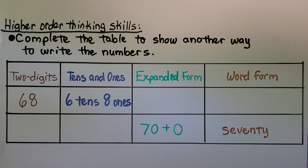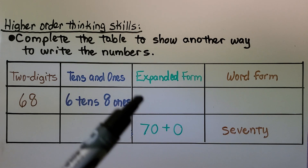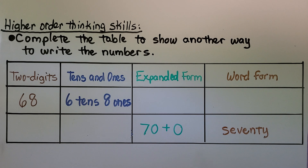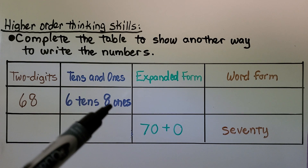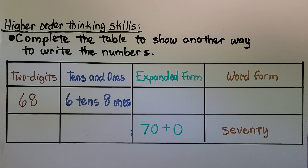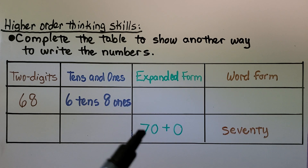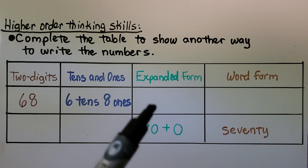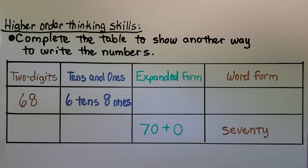Now we're going to use some higher order thinking skills — that means we have to think a little harder. We need to complete the table to show another way to write the numbers: two digits, tens and ones, expanded form, and word form. We can see 68 is written as two digits and as six tens and eight ones. We need to write it in expanded form: 60 plus 8. We write the value of each digit with a plus sign between them.